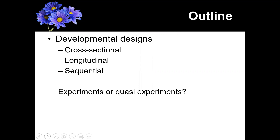Because can we manipulate age? No, we can't manipulate age. Age is a pre-existing factor or condition or trait — a quality that we have to divide people up by, but we can't actually change. When it comes to developmental designs, you can't really say there's causation going on.